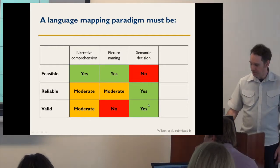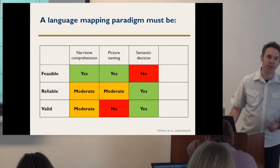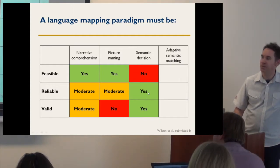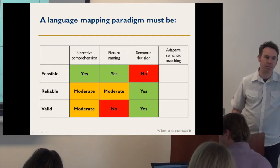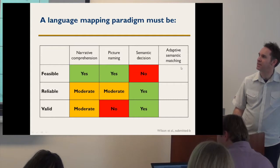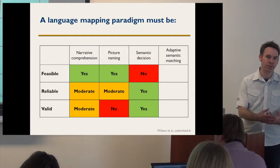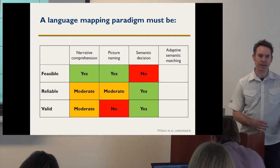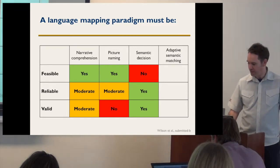We wanted to fill all the boxes — feasible, reliable, and valid — and we decided to build on semantic decision because it actually has good psychometric properties. You just figure out how to make it adaptable to people with aphasia. So we devised a task we call the adaptive semantic matching task. The goal is to take all the good psychometric properties of semantic decision but make it doable by people with aphasia, so that we can actually map language areas in people whose language performance is not fully intact.